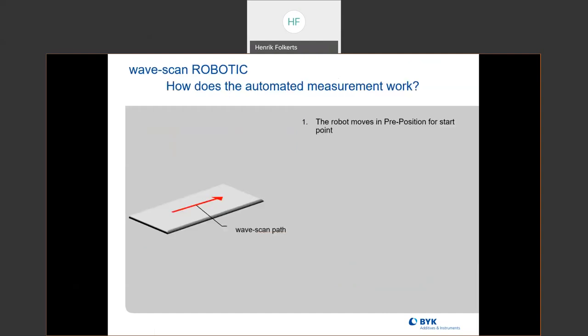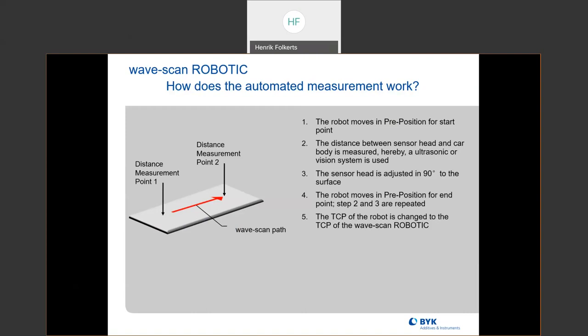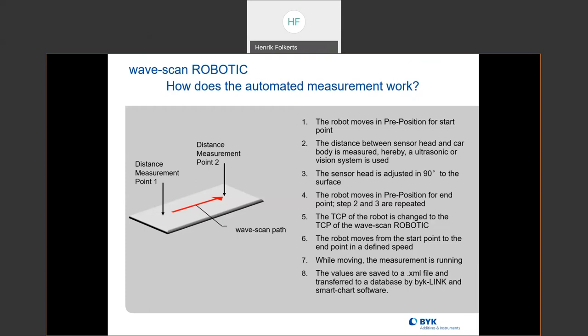How does it work? Basically, the robot puts it in a pre-positioning center or the start point. Then the distance between the sensor and the car is decided by either the ultrasonic or the vision system. The sensor head is adjusted 90 degrees to the surface, and then the robot moves to point 2. The robotic then tells the instrument to measure — once you go from the start point to the end point at your defined speed, the instrument is measuring while it's moving. These values are saved in an XML file and go into BIC Link, and then we also have the new Smart Robotics software.